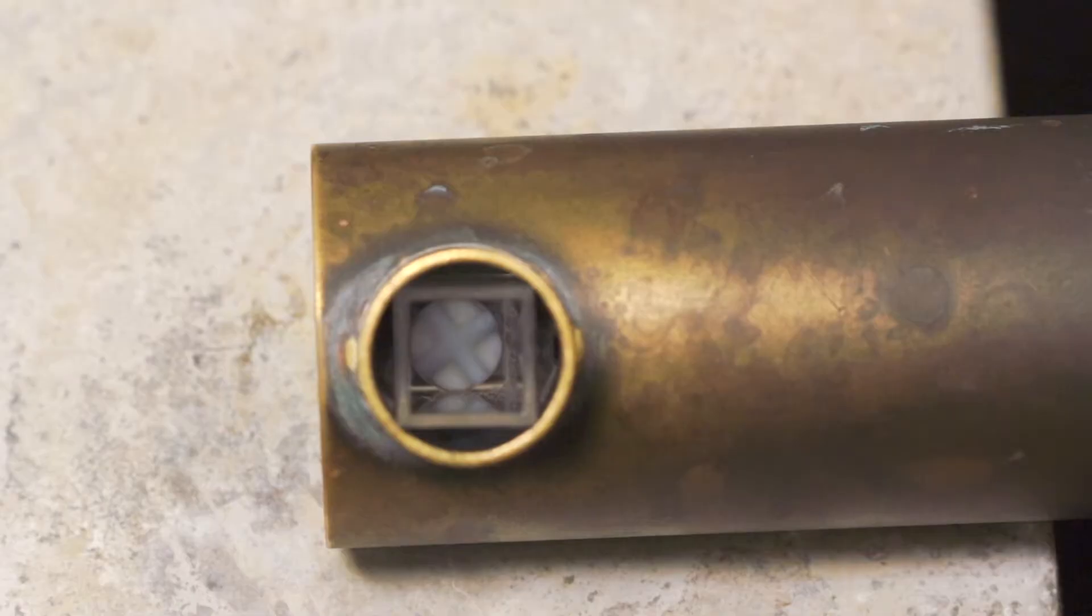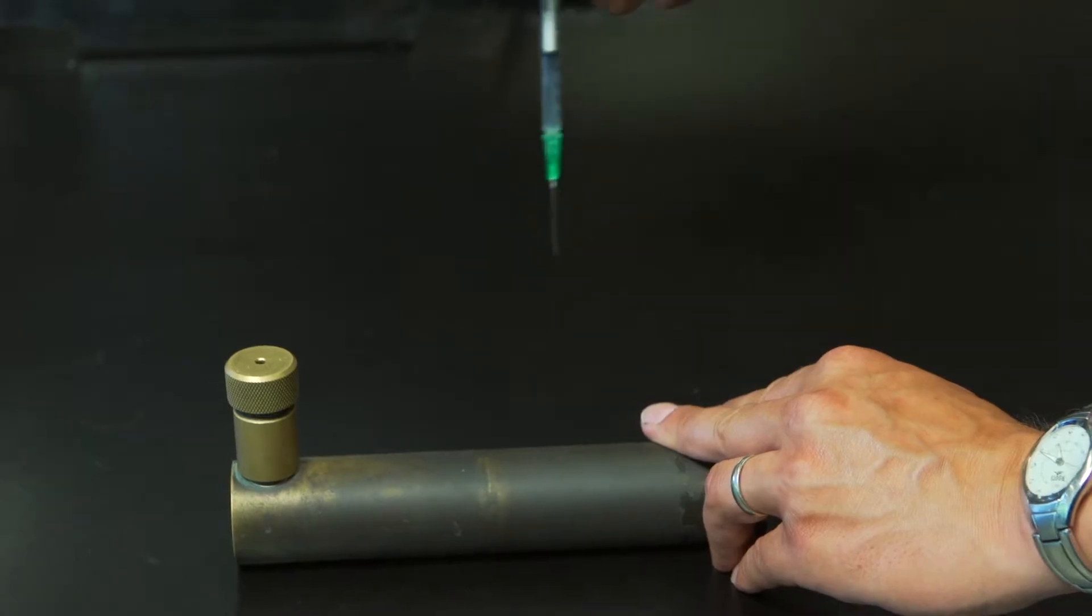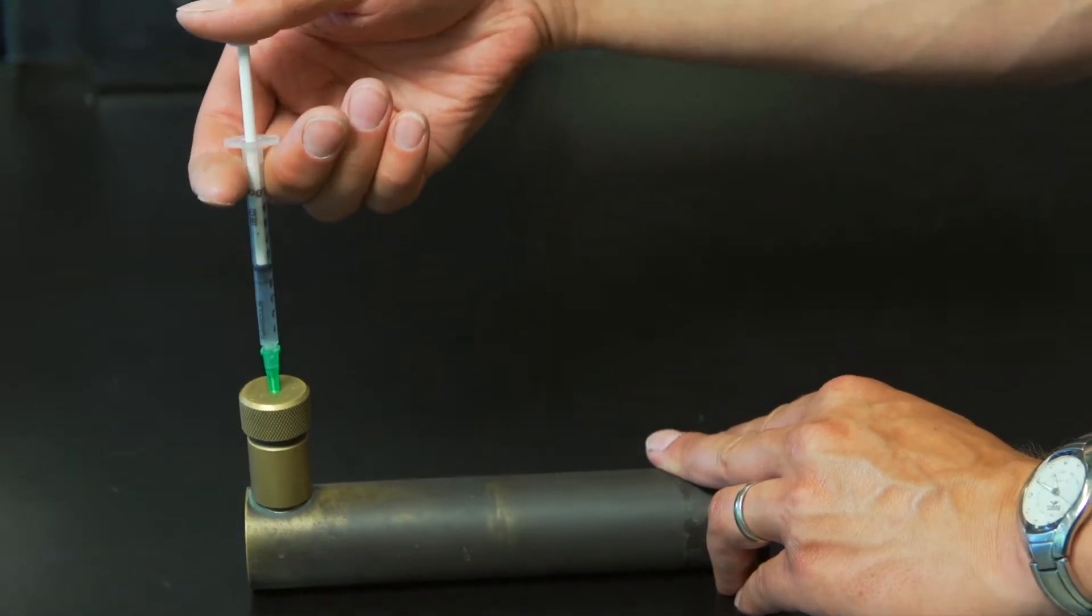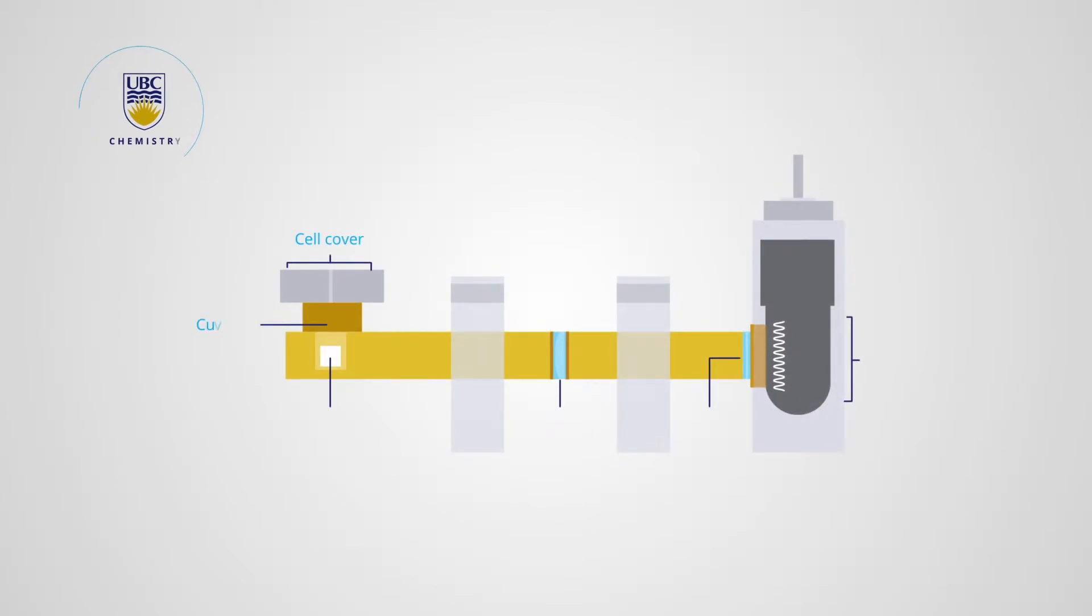Two of the three reagents, hydrogen peroxide and luminol, are pre-mixed here. Your sample is injected into the cuvette through this small opening in the cover. When the sample is incorporated into the reagent mixture,